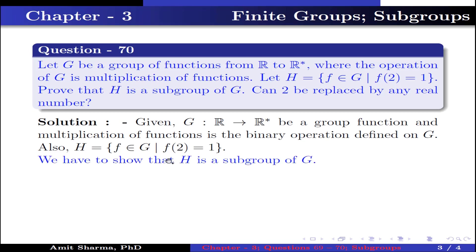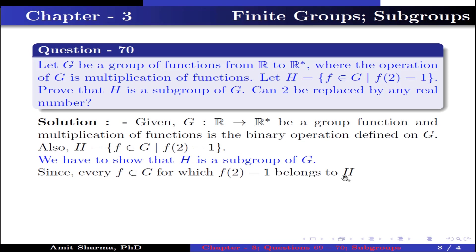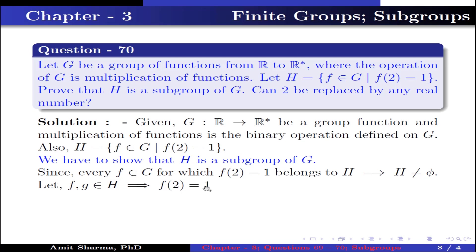We have to show that h is a subgroup of g. Since every f in g for which f(2) = 1 belongs to h, this implies h is not equal to the empty set. Let f, g belong to h, which implies f(2) = 1 and g(2) = 1, where f, g belong to the group g.